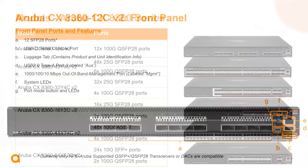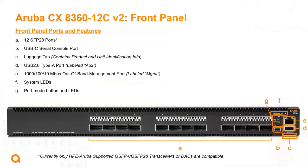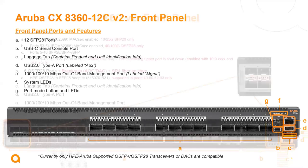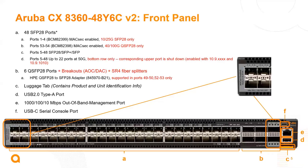Taking a closer look at the switch series, the front panel is very similar across all models. Each front panel has an out-of-band management port, a USB Type-A port labeled as the AUX port, a luggage tab, a USB-C console port, system LEDs, and port mode buttons for those LEDs.